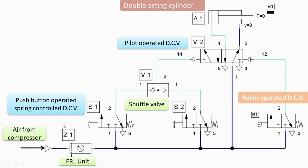Then we have two valves, S1 and S2, which are push button operated and spring controlled direction control valves. They are normally closed valves — this is the closed position, this is the closed port, and this is also the closed port. So unless and until the push button is pressed, we will not get the open position or left envelope mode of either valve.